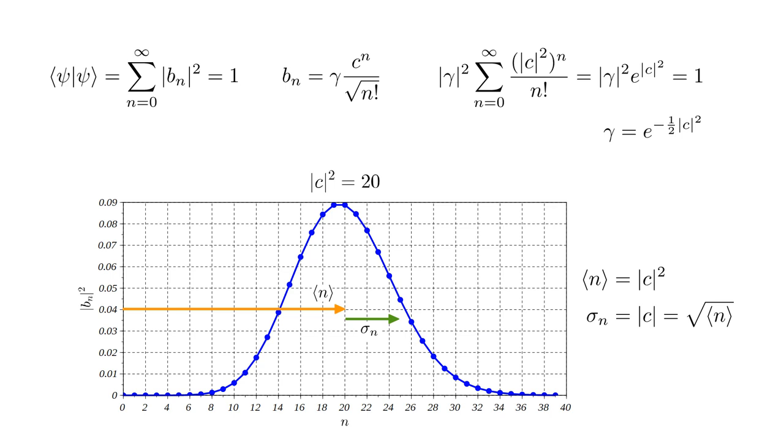We find this equals |c|², 20 for the case plotted. The width of the distribution can be quantified by the root mean squared deviation, denoted by σn. This equals |c|, which equals √⟨n⟩, about 4.5 for the case shown.